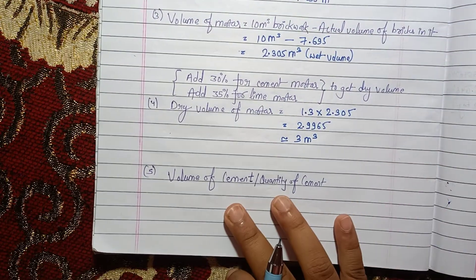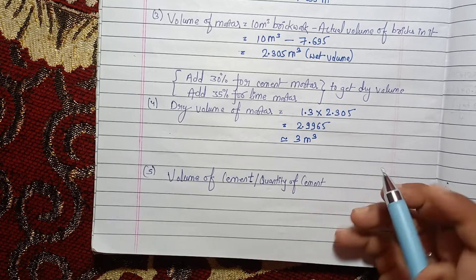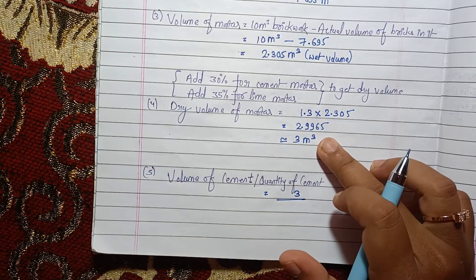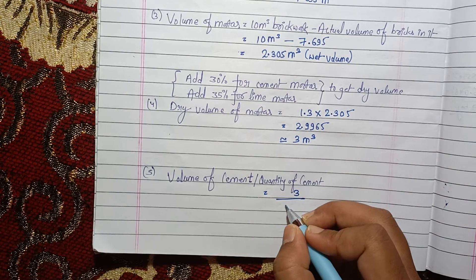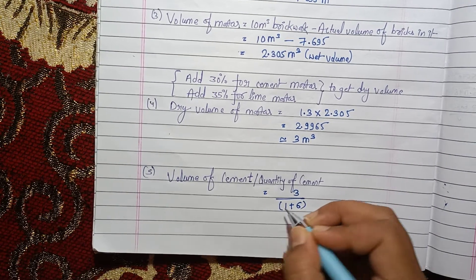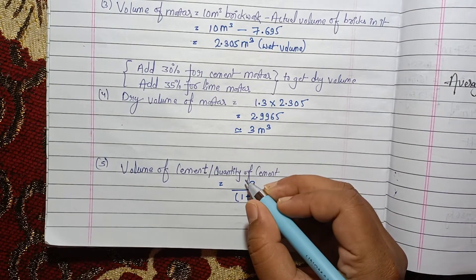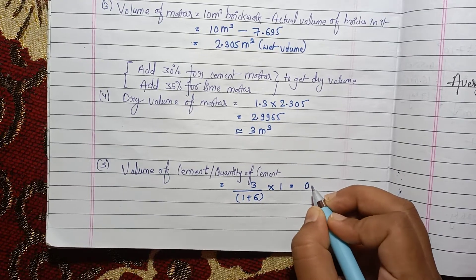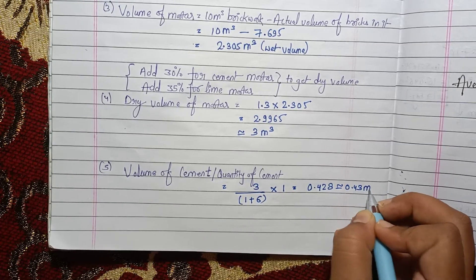To calculate the quantity of cement, we put the dry volume of mortar over the sum of the mortar ratio. The ratio is 1 is to 6, so: 3 divided by (1+6), multiplied by 1 (the cement portion), equals 0.428, approximately 0.43 cubic meters of cement.